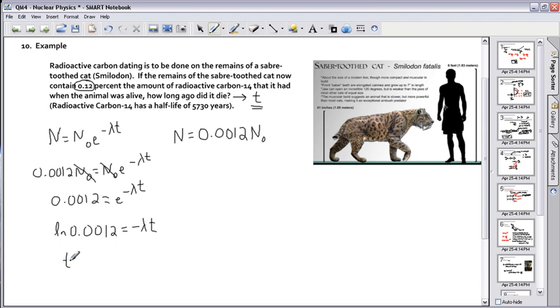Therefore, if I want t by itself, it's going to be ln 0.0012, divide that by negative lambda.